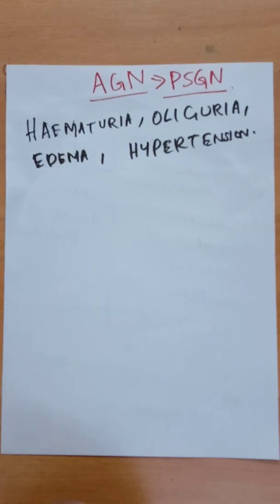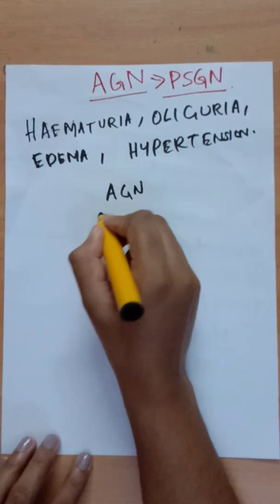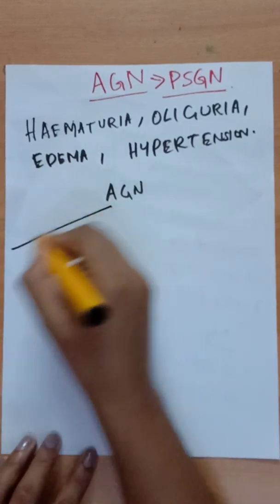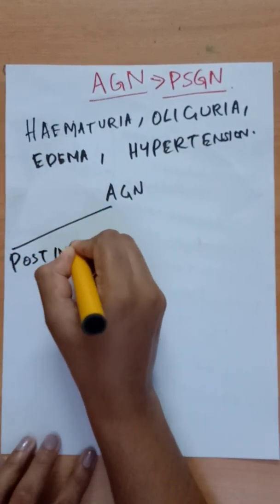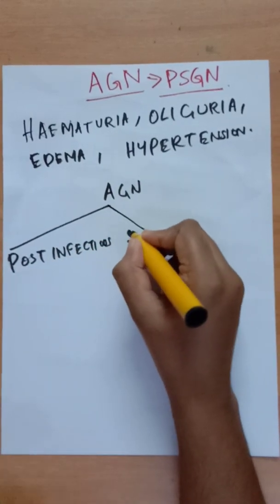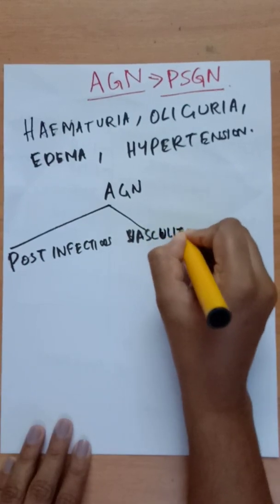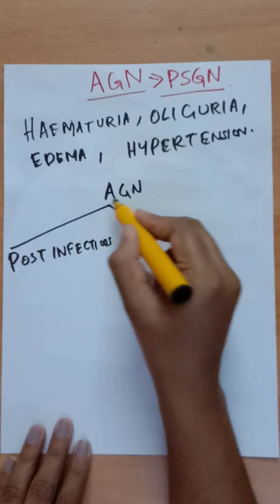Post-streptococcal glomerulonephritis is the most common cause of acute glomerulonephritis in India. The etiology of acute nephritic syndrome can be divided into post-infectious causes, systemic vasculitis, and other causes.